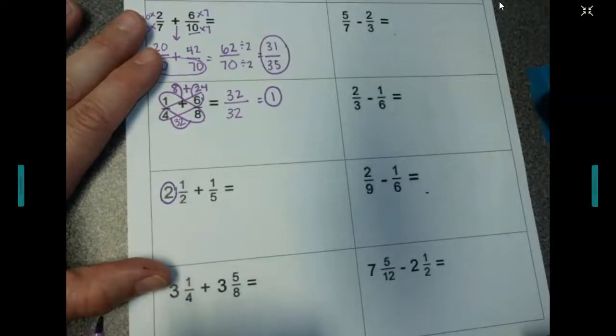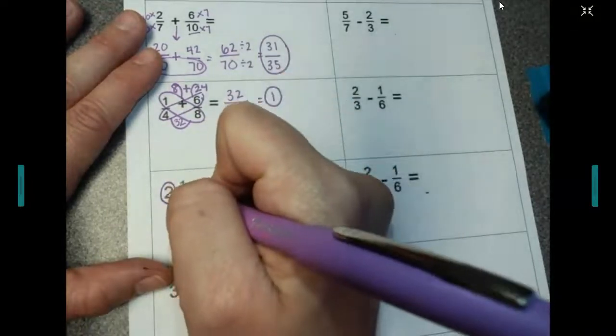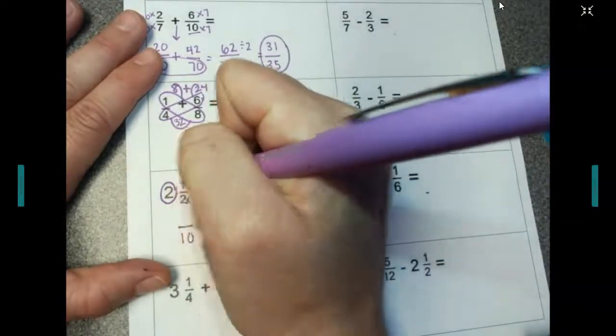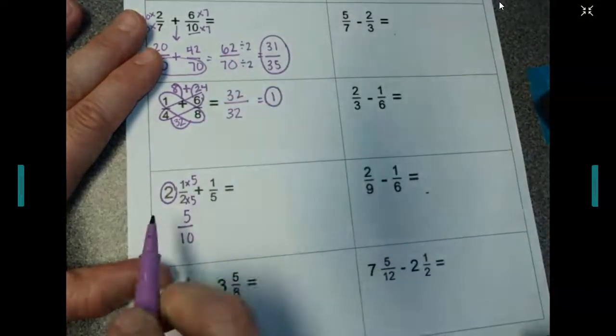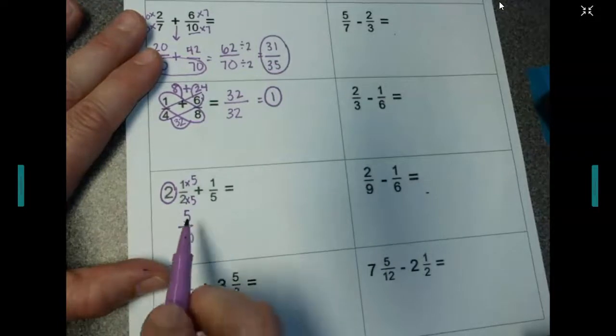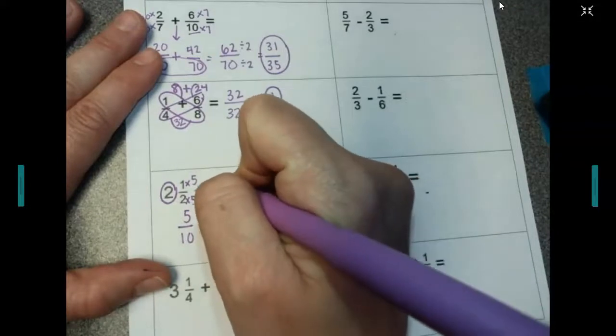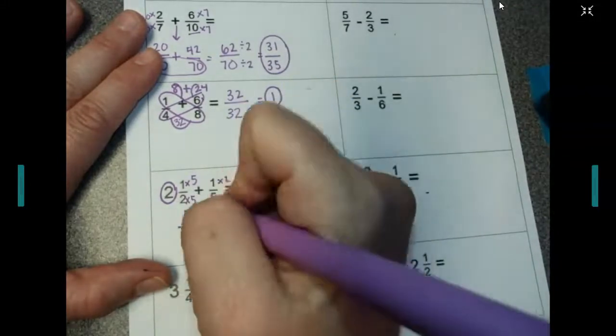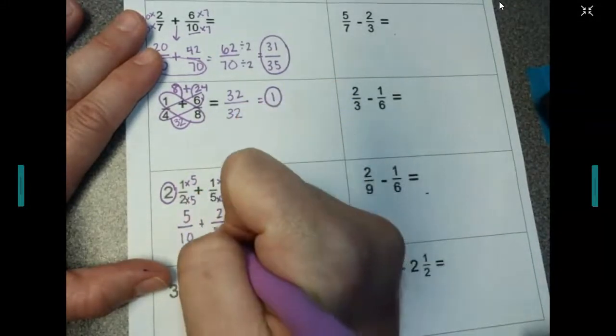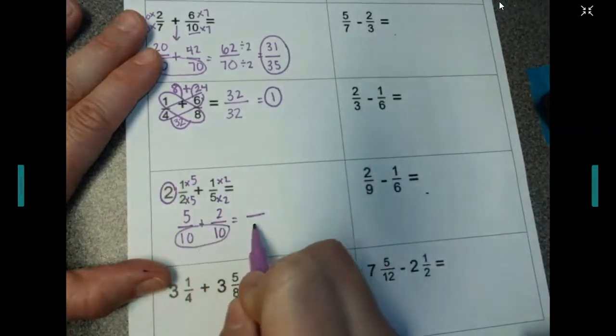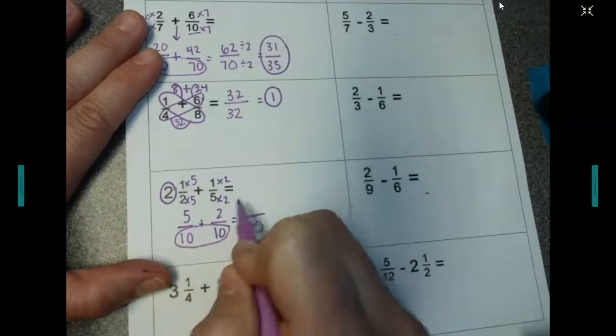I'm going to find common denominators. I know that 2 times 5 is 10. So I'm going to change this. Whatever I do on the bottom, I do on the top. 1 times 5 is 5. And I have to change this guy over here to be 10 on the bottom, so I'm going to multiply by 2 on top and bottom. So 1 times 2 is 2. 5 times 2 is 10. My denominators are the same now. So I have a 10. 5 plus 2 is 7.